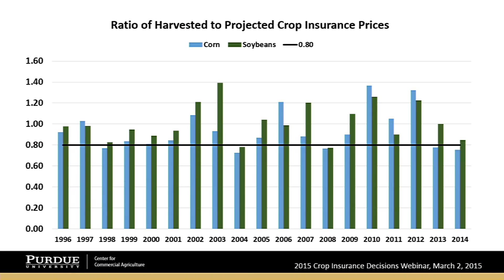Let's look at the relationship of harvest prices to the projected crop insurance prices used to compute premiums, going back to the mid-1990s. The blue bars are corn, the green bars are soybeans, and we've drawn a black line at the 0.8 level. At 1.0, the projected crop insurance price computed in February equals the harvest time price. Above 1.0 means harvest price was above projected price; below 1.0 means harvest prices were below projected prices.